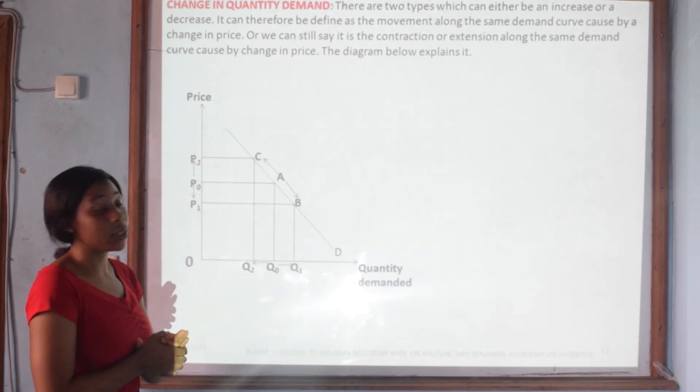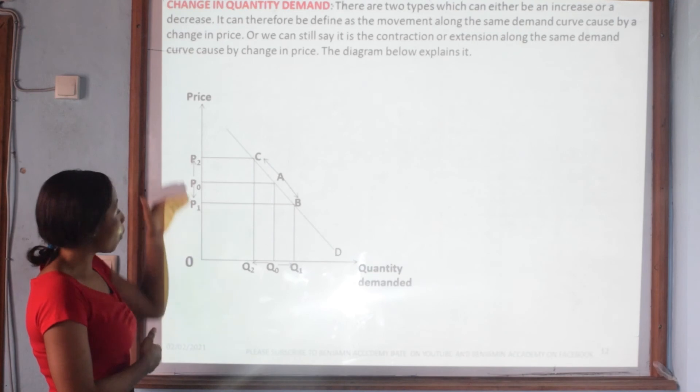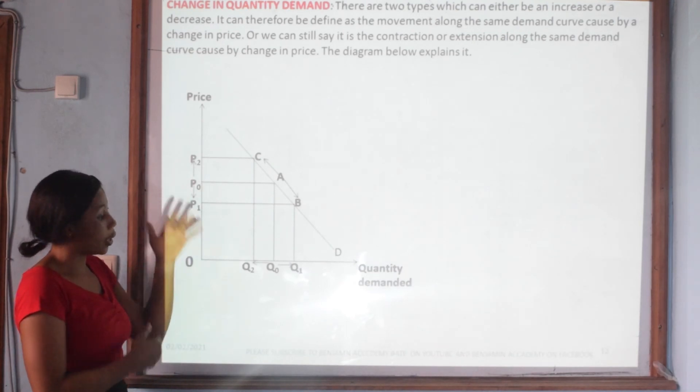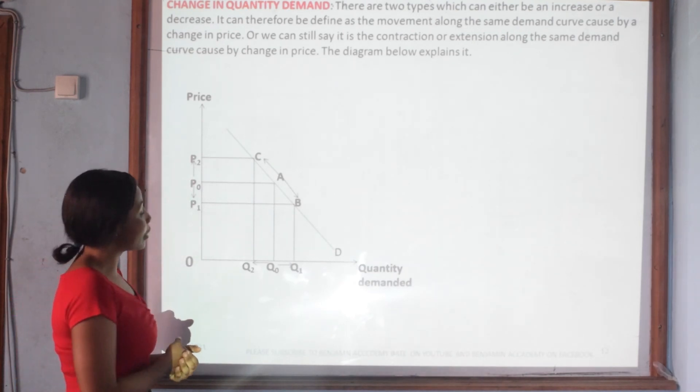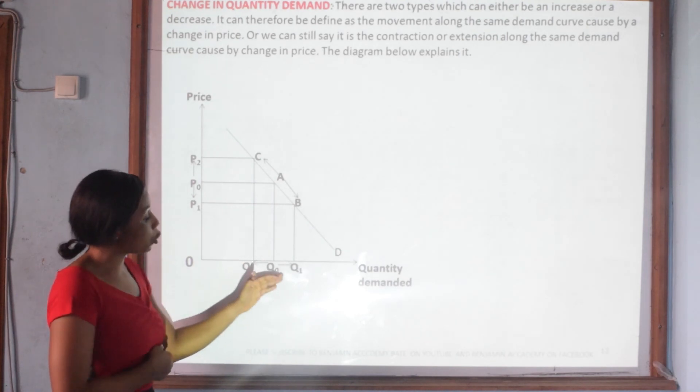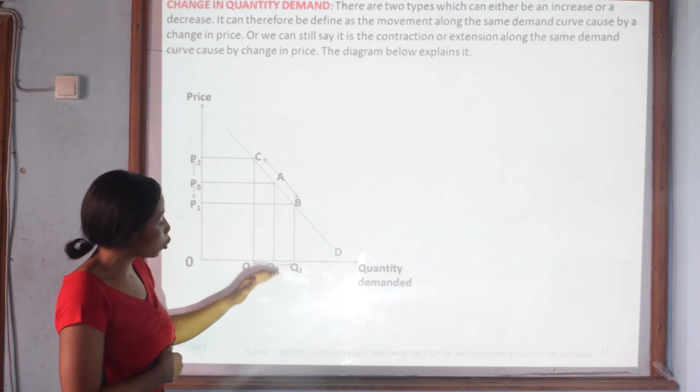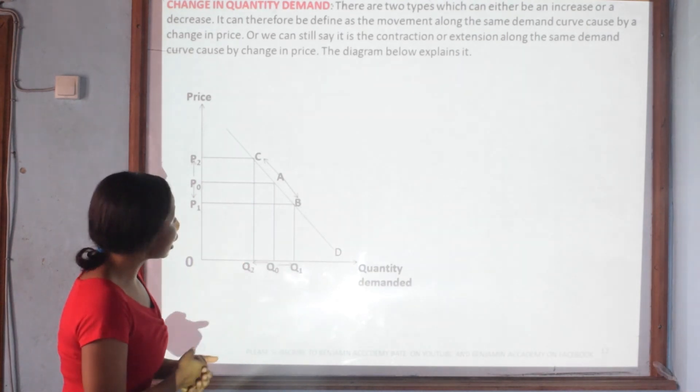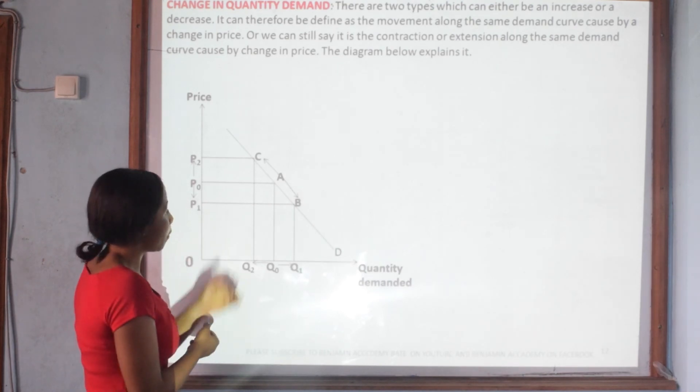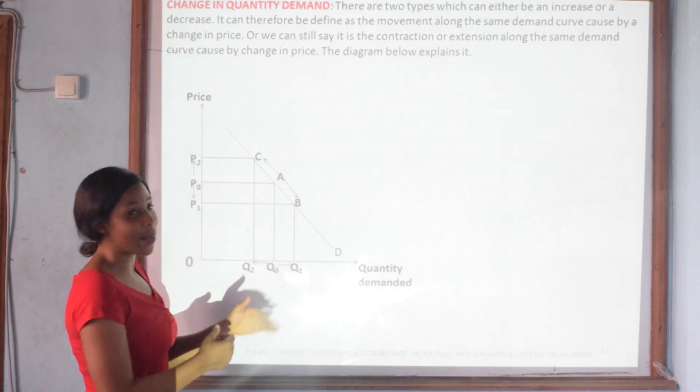Now consider the fact that price falls from P0 to P2. This is going to lead to an increase in demand from Q0 to Q2, and this will be indicated by an extension in the demand curve from point A to point C.